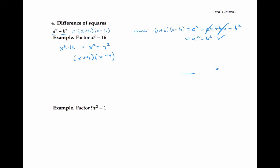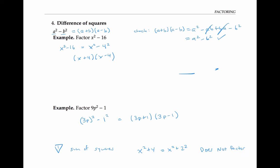For the first example, x squared minus 16 is x squared minus four squared — a difference of squares — so I can write it as x plus four times x minus four. For the second example, nine p squared minus one is three p squared minus one squared, so that's three p plus one times three p minus one. Note that a sum of squares, like x squared plus four, which is x squared plus two squared, does not factor — the difference of squares formula doesn't apply and there is no formula for a sum of squares.